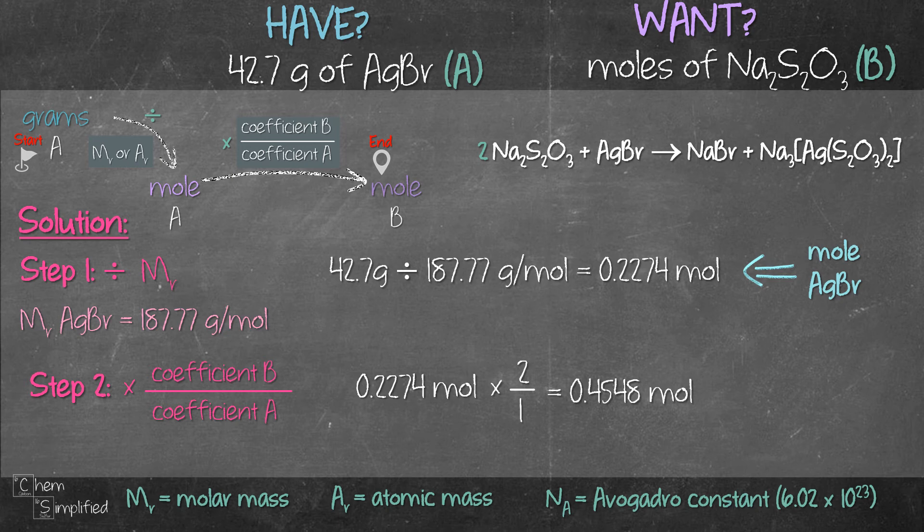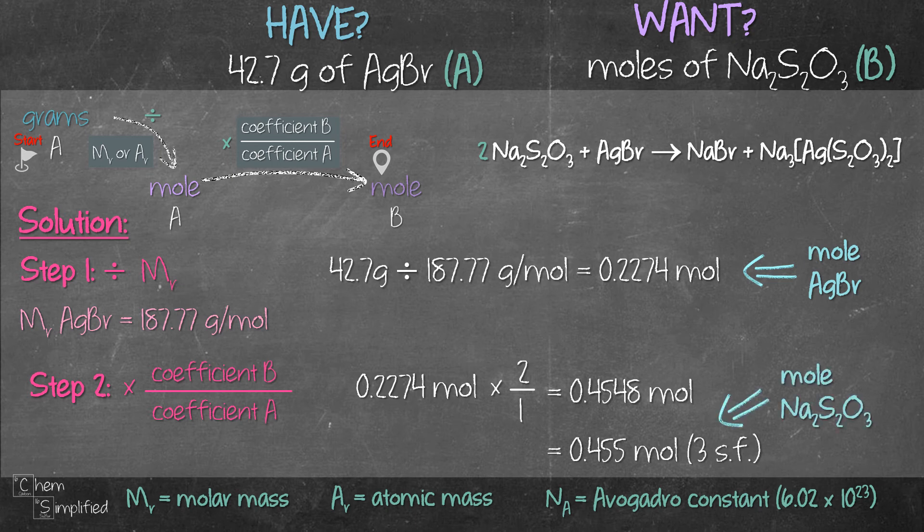If you need to present it in three significant figures, then it's 0.455 mole. That's the mole of Na2S2O3, which is what the question wants us to find.